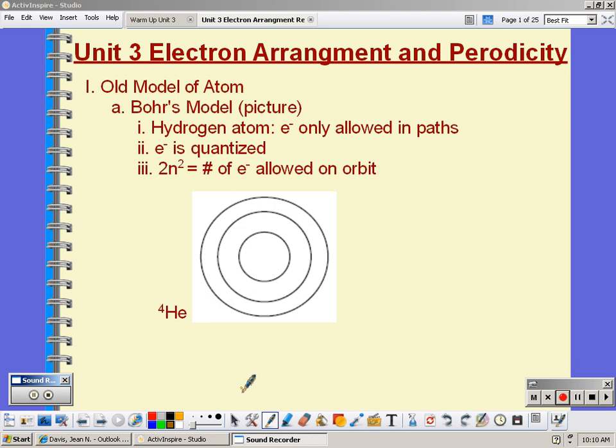A guy by the name of Bohr did some research with the planetary model. He only really looked at hydrogen because hydrogen is number one on the periodic table, so it has one proton and one neutron. So it was easier to explain.